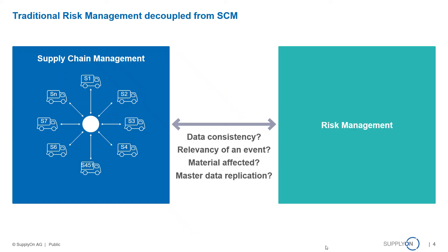This happens partly because traditional risk management is often set up entirely decoupled from your operational supply chain processes. You establish a separate solution to get risk information about your supply chain, but if it's not directly linked into your supply chain processes and systems, how do you deal with data consistency? How do you deal with changes to your supplier networks? And more importantly, what is the relevancy of an event? It's good to know where and when something happens, but what is the effect on my material? What can I tell my material planners about how they are affected, which material will be missing, and where will I have supply and production issues? Keeping operational processes and risk management systems in sync — regarding master data, transport lanes, and supplier locations — is a big issue in traditional risk management.